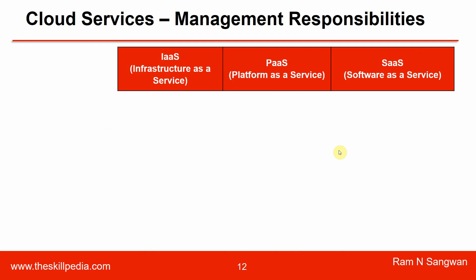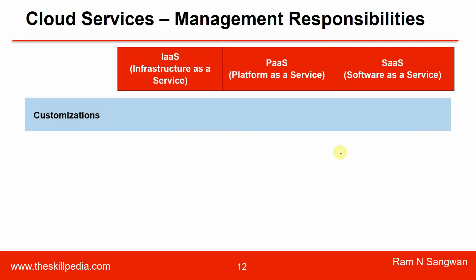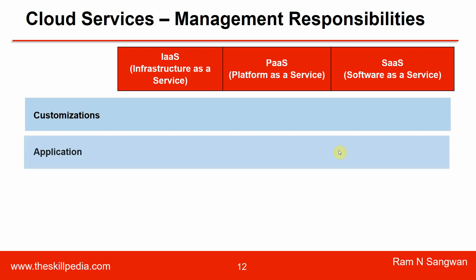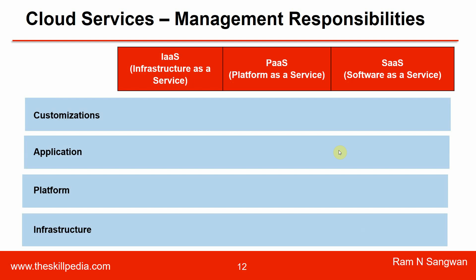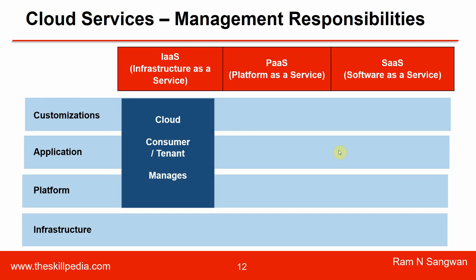Cloud services management responsibilities: who manages what in the three typical models. In Infrastructure as a Service, customizations, applications, and platform are the responsibility of the customer or tenant, while the infrastructure — the backend hardware given to you as a service — is the responsibility of the cloud provider. Management of that infrastructure backend is the cloud provider's responsibility.